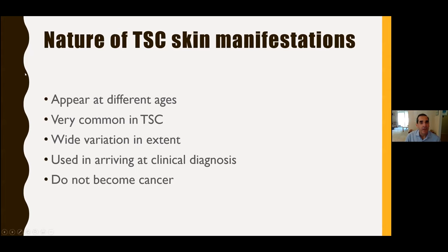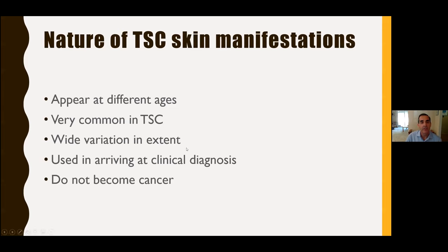The TSC skin changes appear at different ages. Very commonly, the hypomelanotic macules will be present at birth or shortly thereafter — they may not be as evident and may need a Woods lamp to accentuate their appearance. The angiofibromas often occur around age three to five. Ungual fibromas are the latest to appear, usually in teenage years or after. These skin lesions are very common, eventually occurring in most individuals with TSC, but not all. There's wide variation in extent. Skin lesions are used in arriving at the clinical diagnosis of TSC. And none of these skin lesions become cancerous.